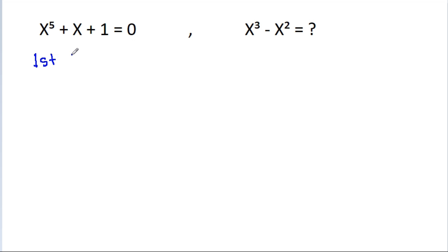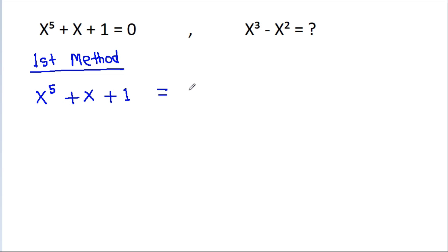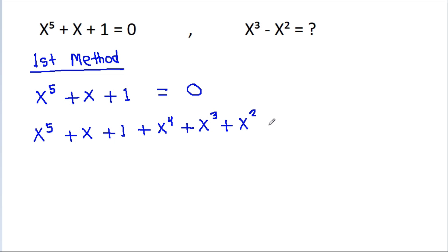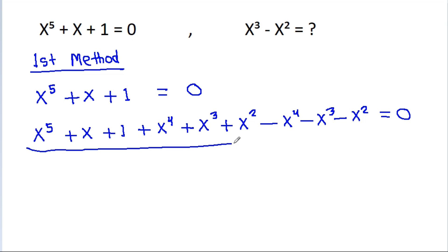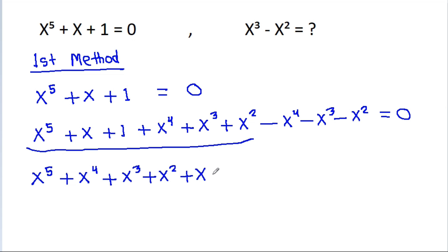The first method: we have x power 5 plus x plus 1 is equal to 0. If we add x power 4, x power 3, and x power 2, and subtract x power 4, x power 3, and x power 2, it equals 0. This gives us x power 5 plus x power 4 plus x power 3 plus x power 2 plus x plus 1.